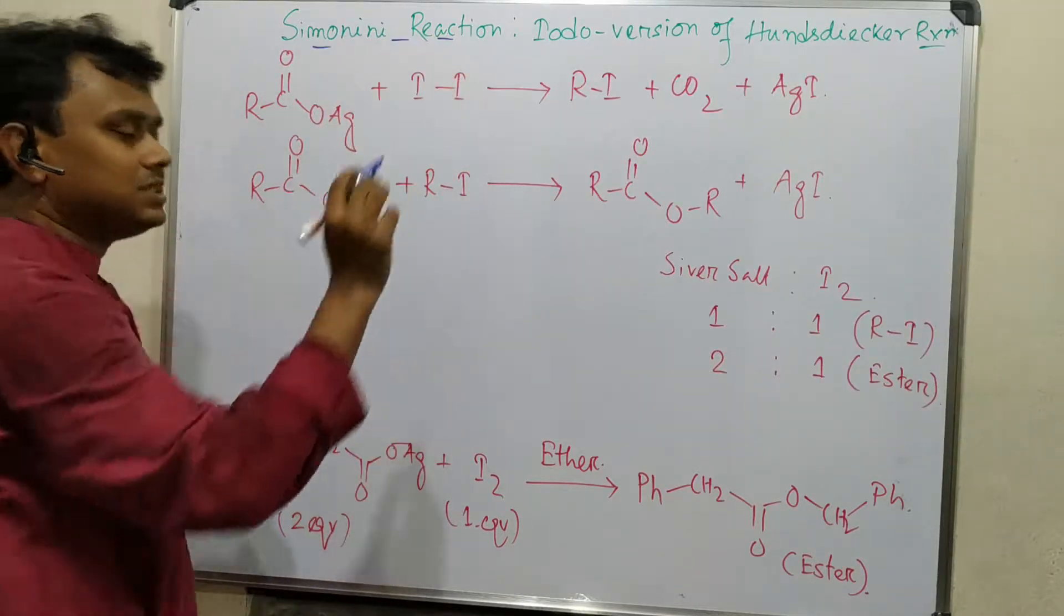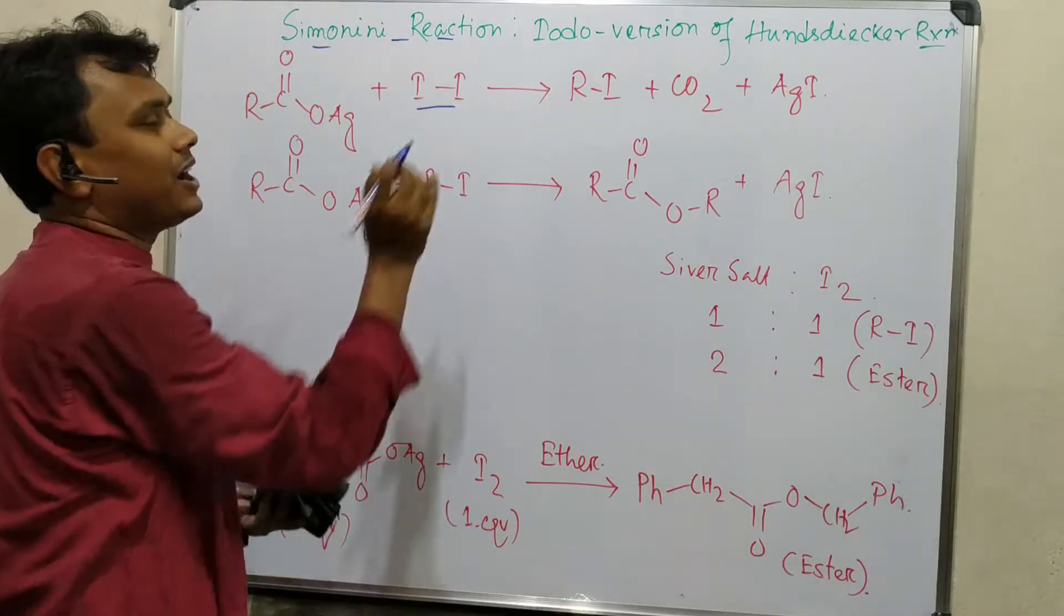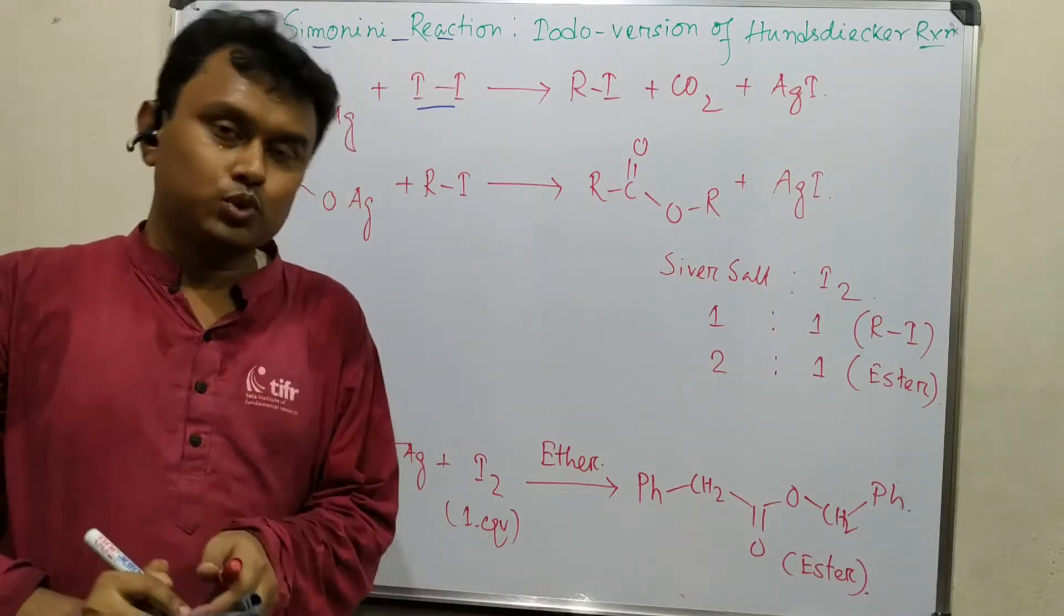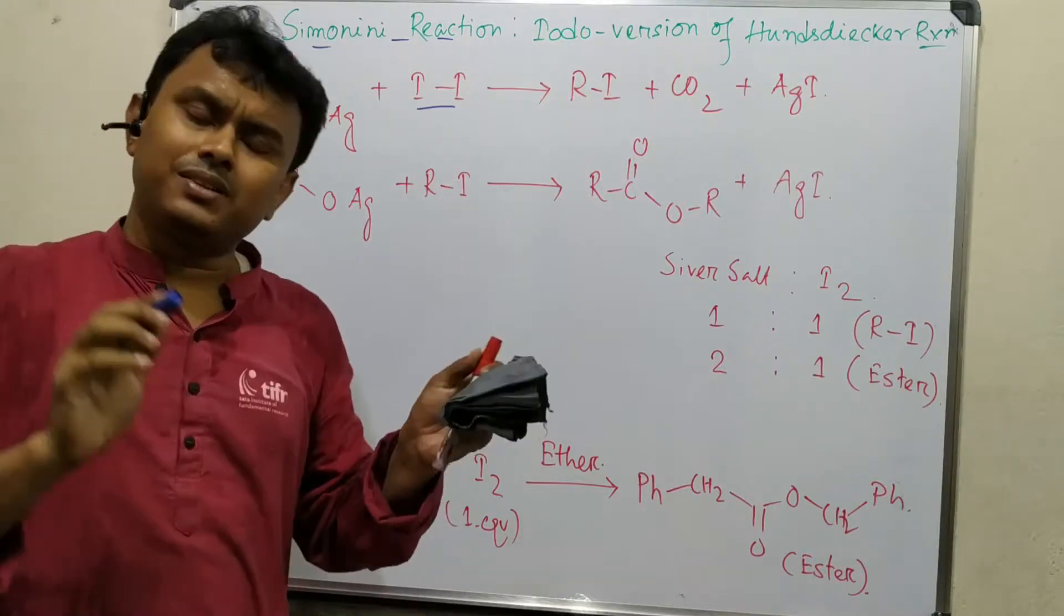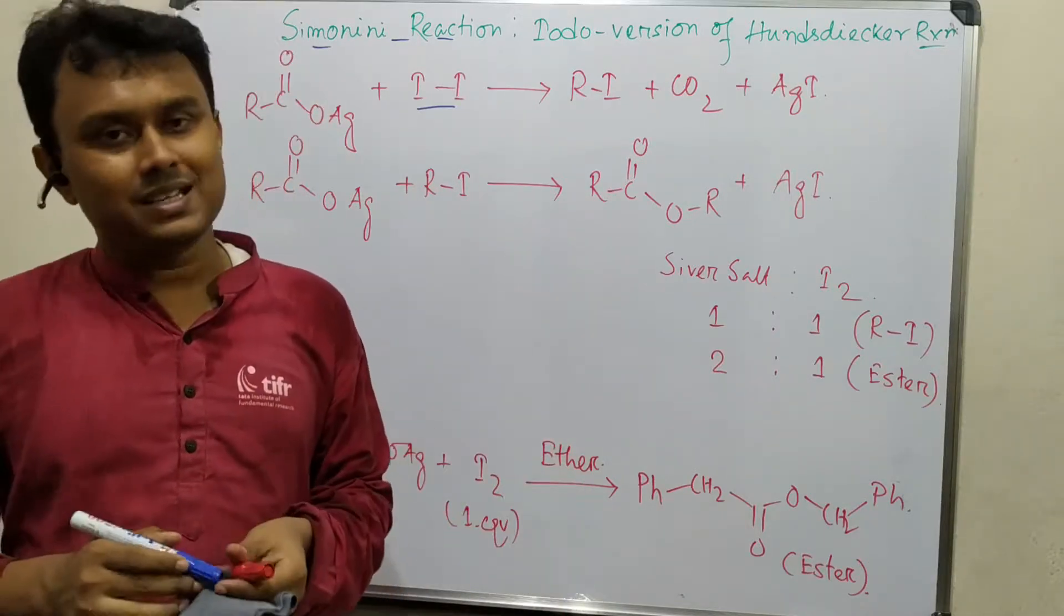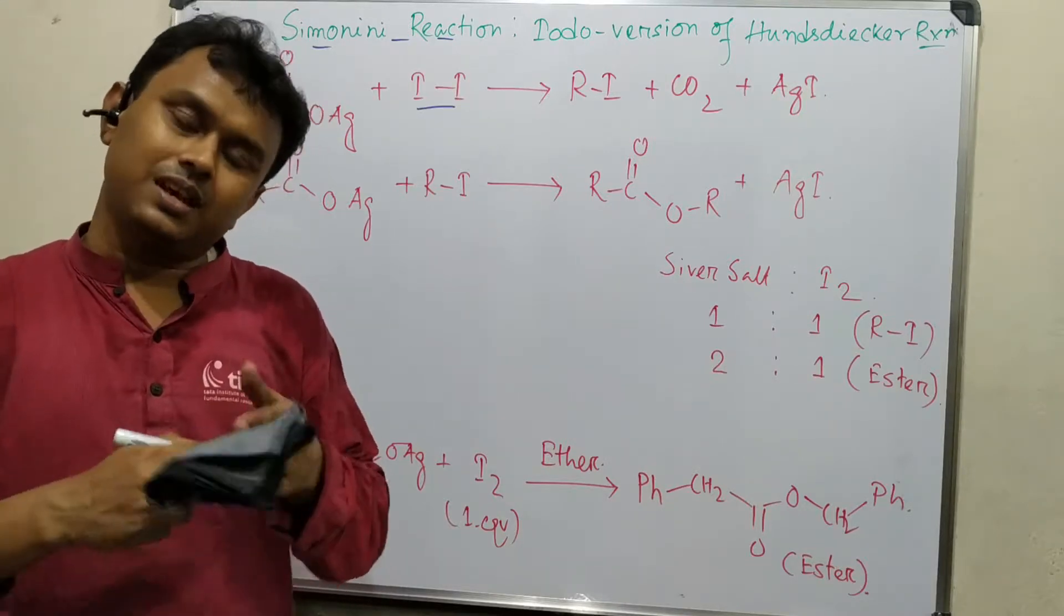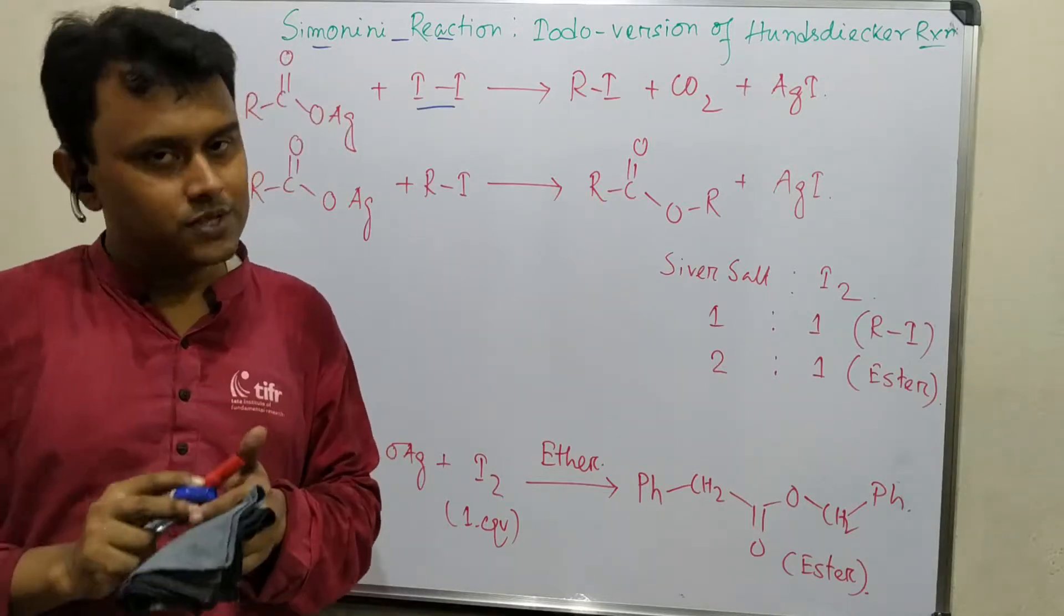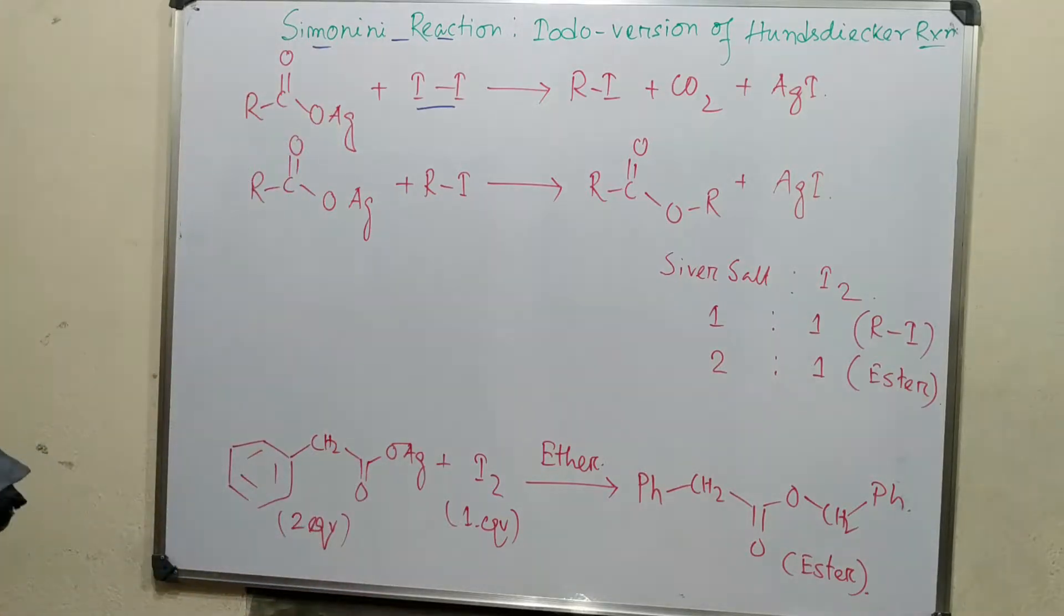This is a similar version of Hunsdicker reaction but the halogen is iodine. So I suggest you first please go through the Hunsdicker reaction where I have explained the background mechanism and examples in detail. If you have a complete idea of that, this video will be very easy to understand. I will give a short course here but I suggest please go through the first video before this one.